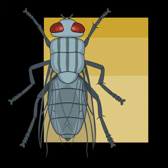Different groups of copepods have the articulation at different places. In the Calanoida, the articulation is between the thoracic and abdominal segments, so that the sixth thoracic segment is in the thoracic segments — see the diagram. Tagmosis is an extreme form of heteronomy, mediated by Hox genes and the other developmental genes they influence.